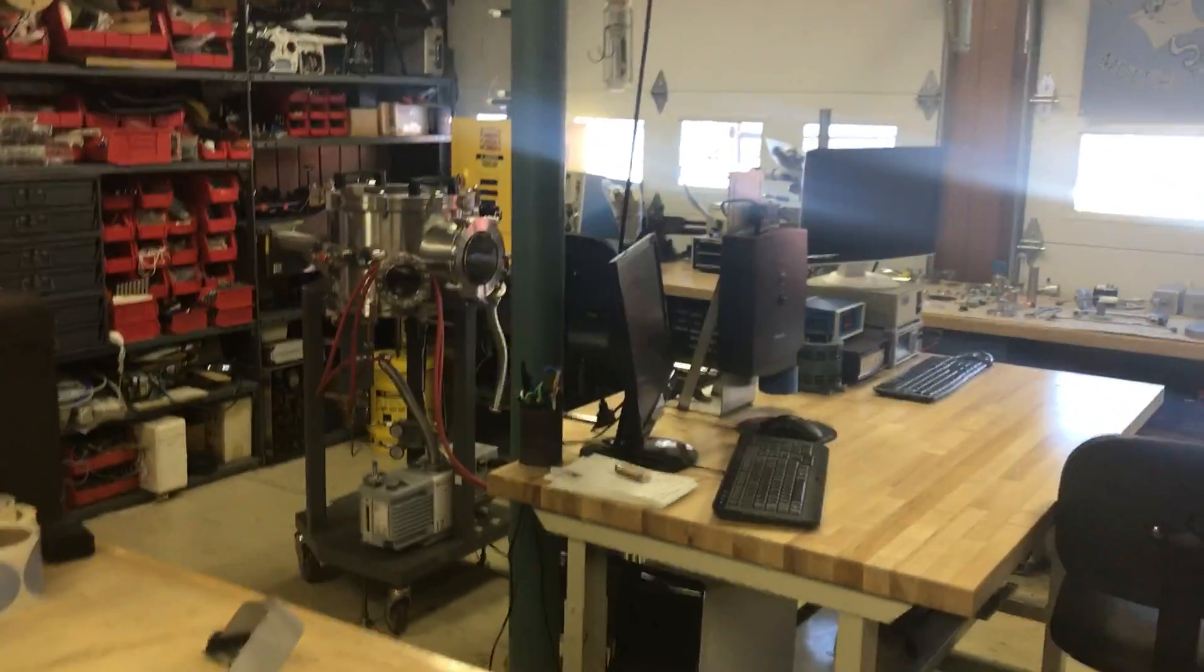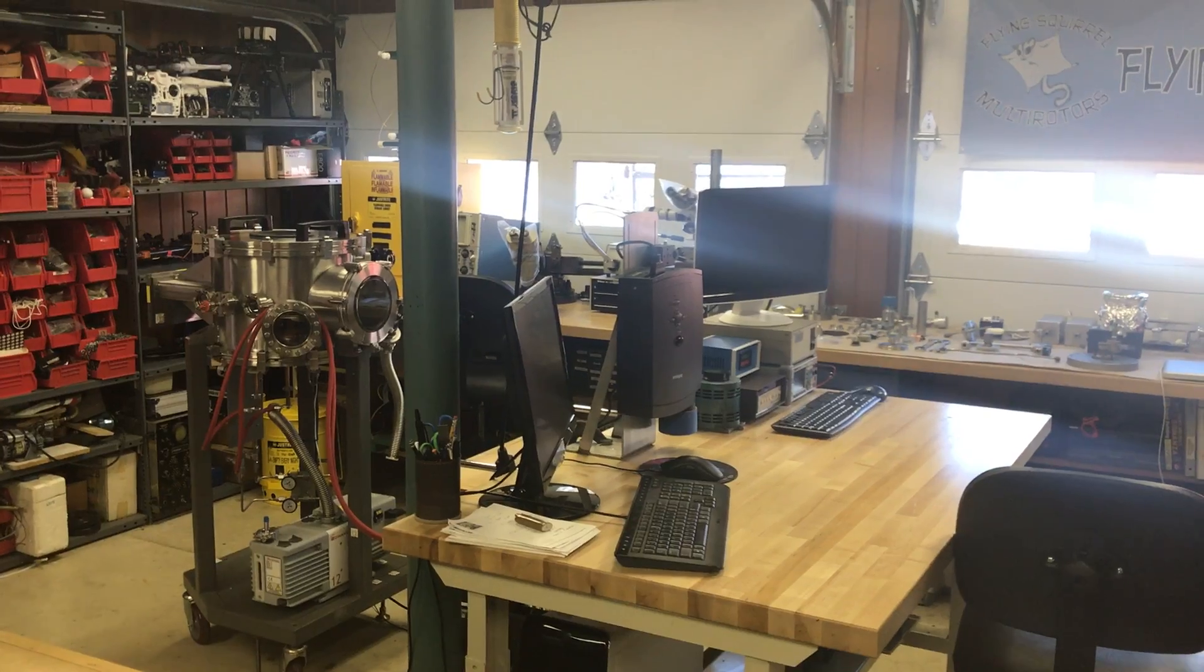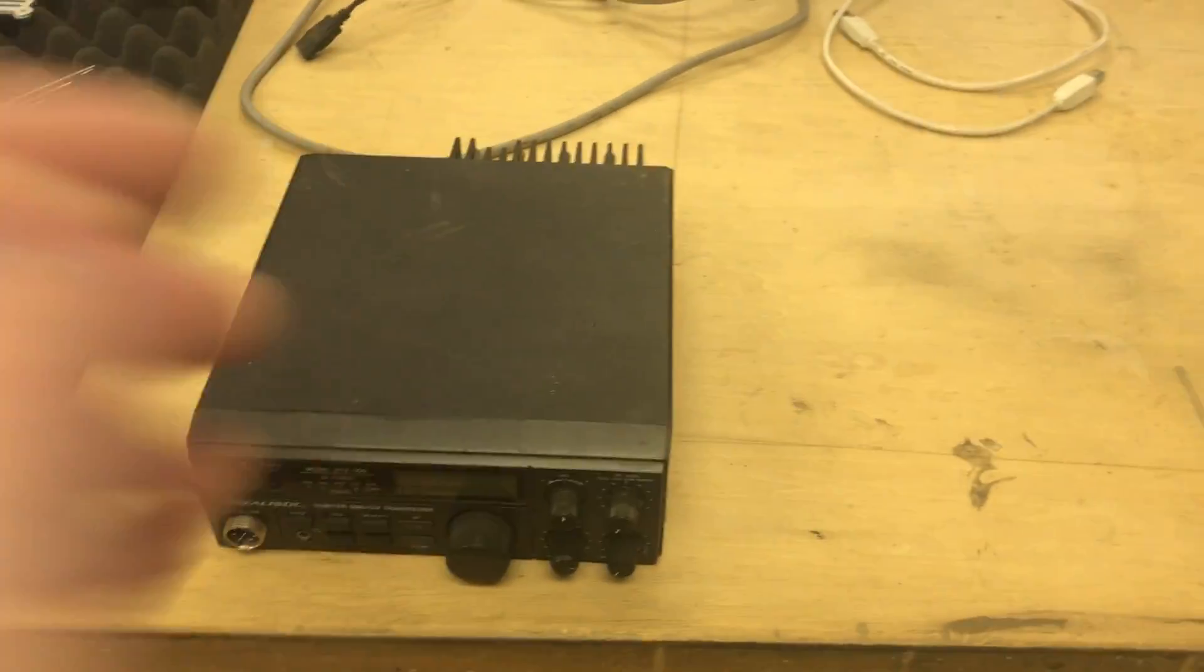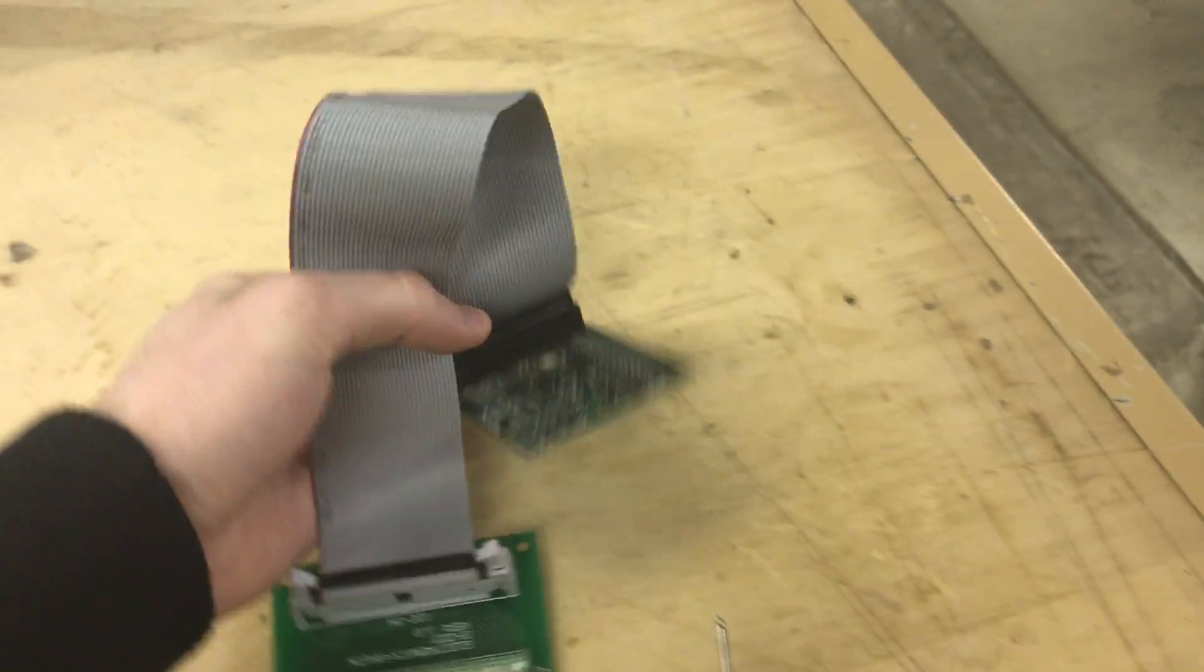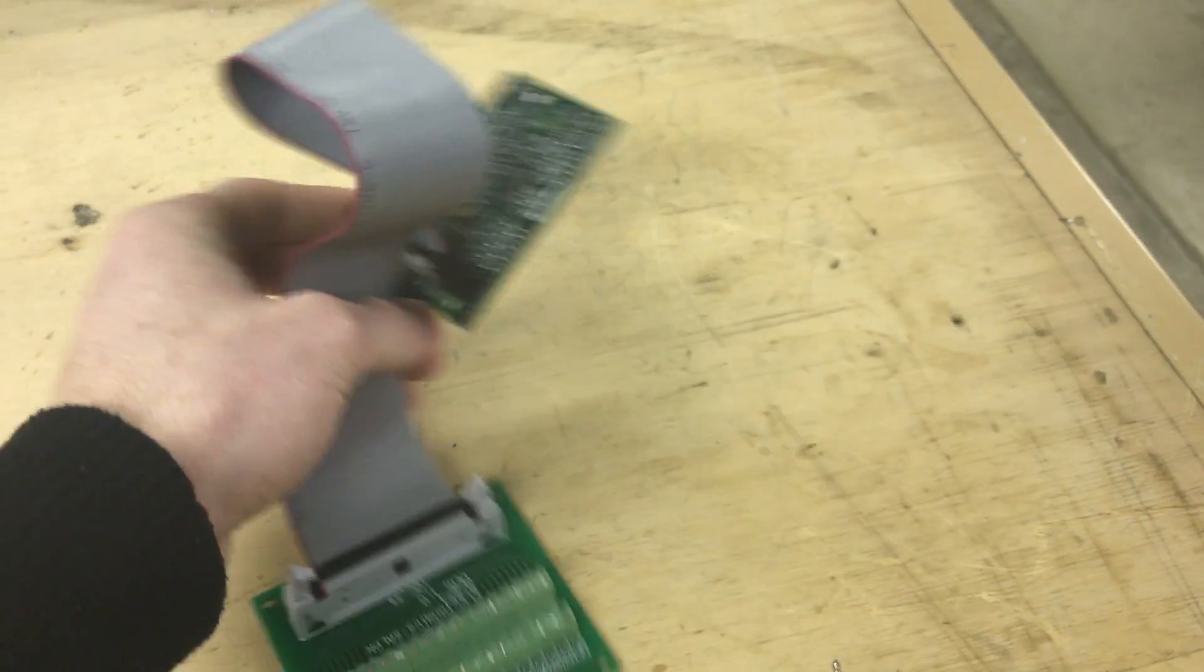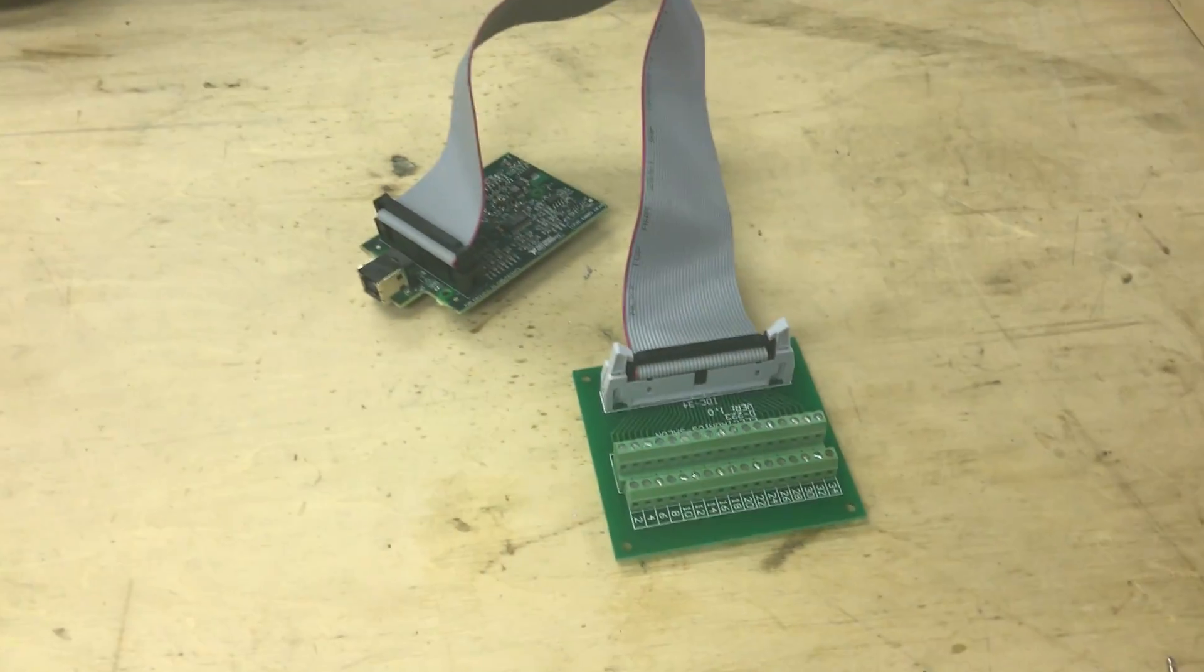And over here I have thin film deposition stuff. RF source for plasma cleaning and stuff. I'm working on the vacuum chamber. This is a National Instruments USB 6009 DAC I'm using to build a controller for the vacuum chamber.